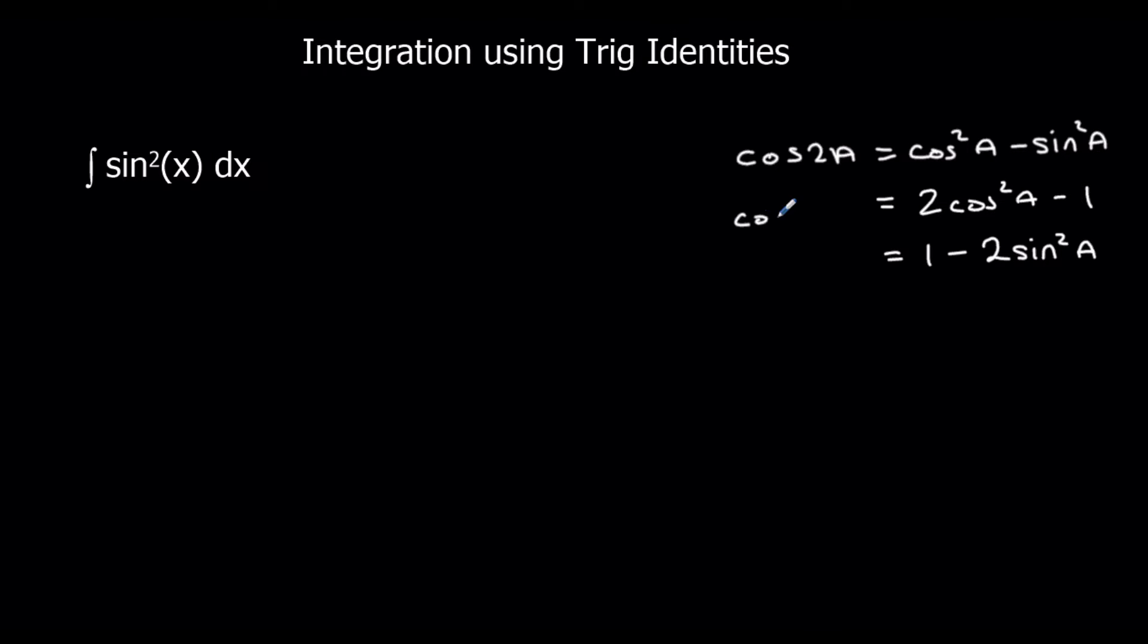So if I wanted to integrate sin²x, I'll use the identity with sin in it. So in this case I'm going to be eliminating, getting rid of, the sin²x using this identity.